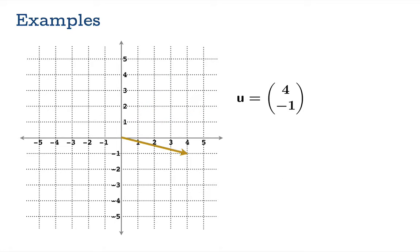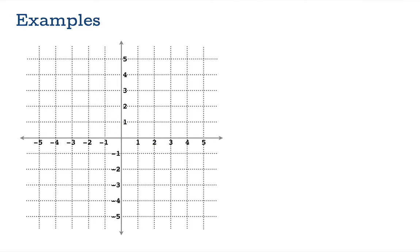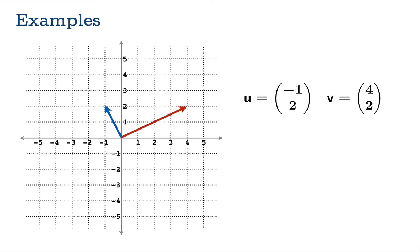Let's take the dot product of (4, −1) and (−2, 5). When all the dust settles, that dot product is −13. And here's another example: (−1, 2) and (4, 2), where the dot product is 0. So the dot product can apparently be positive, negative, or zero — all options are on the table.